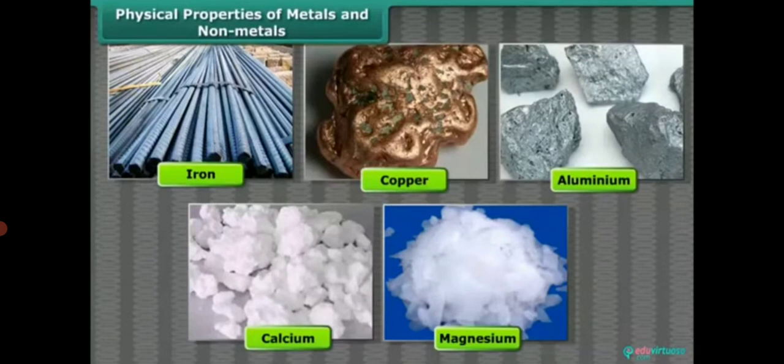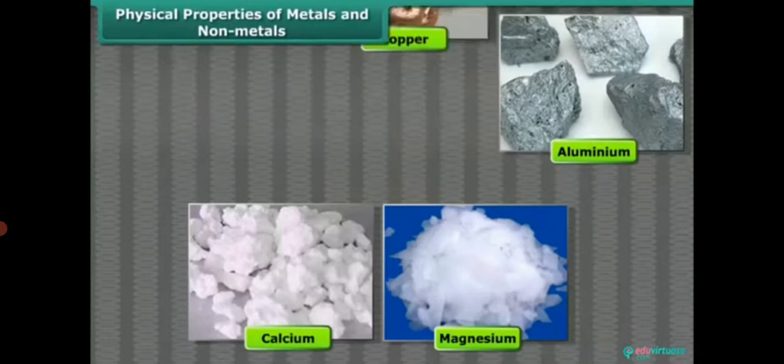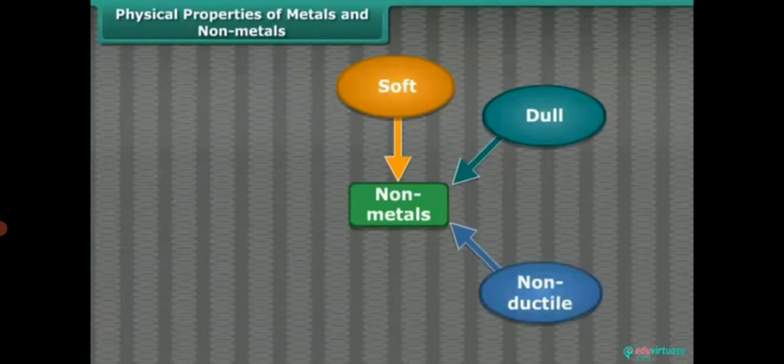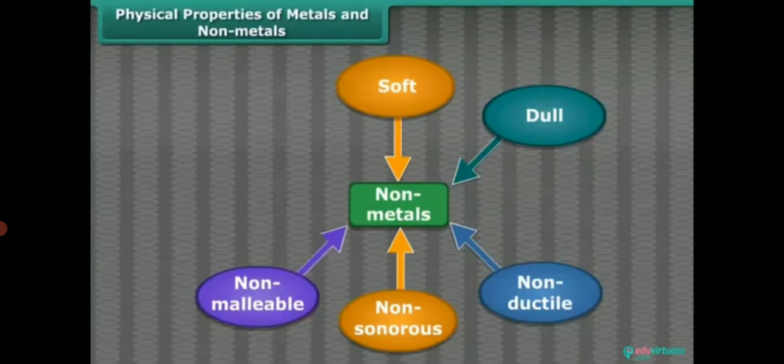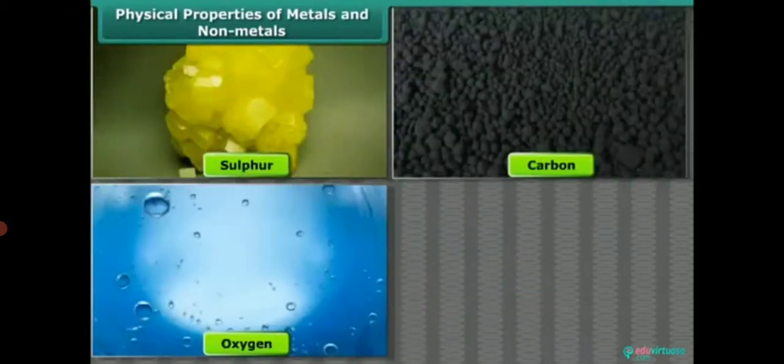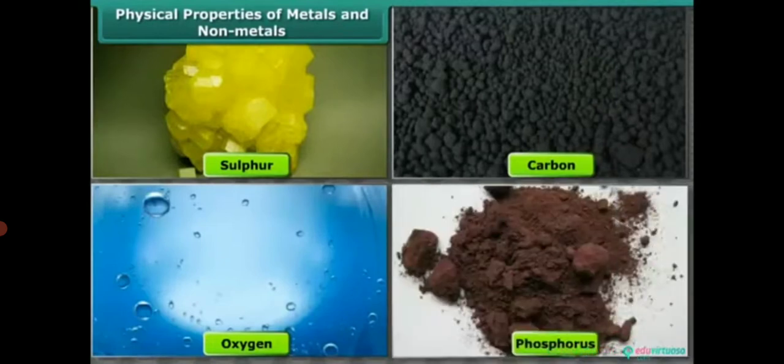Non-metals like coal and sulfur are soft, dull, non-ductile, non-sonorous, non-malleable and poor conductors of heat and electricity. Sulfur, carbon, oxygen, phosphorus, etc. are the examples of non-metals.